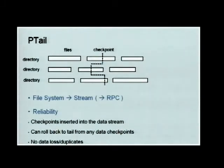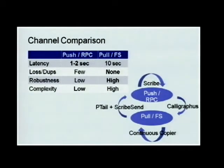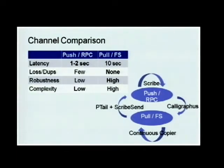This is actually the power of pulling data from our file system. In Data Freeway, we have two channels of data flow: one is push-based on RPC, and another is pull-based on a file system.